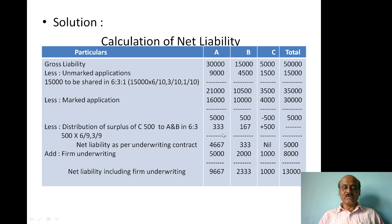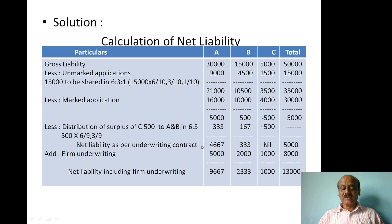This gives us the net liability as per the underwriting contract. But now we also add firm underwriting. As per the firm underwriting brackets noted in the problem: A's firm underwriting = 5,000; B's firm underwriting = 2,000; C's firm underwriting = 1,000. Total firm underwriting = 8,000.